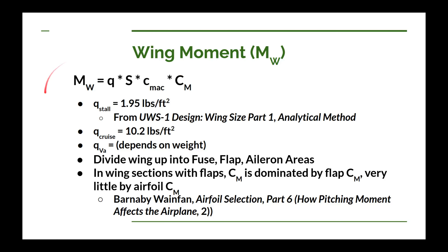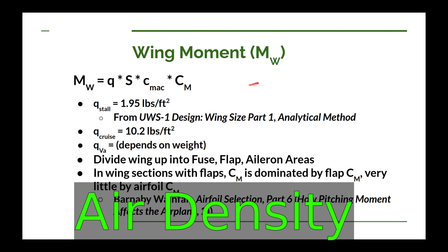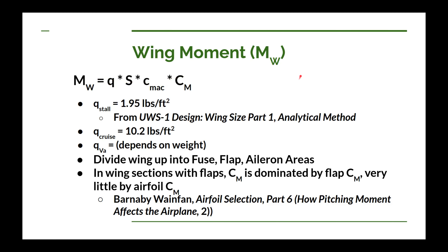There's an equation for calculating our wing pitching moment, and it involves the value Q. Q is a shorthand value for one half of the air density multiplied by velocity squared. We always use sea level air pressure for our design, but velocity will vary by condition — stall condition, maneuvering speed, and cruise speed.